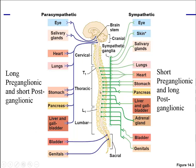The locations of pre- and postganglionic neurons differ between sides. On the parasympathetic side, preganglionic neurons are usually very long and postganglionic are very short. On the sympathetic side, preganglionic neurons are short and postganglionic are very long.